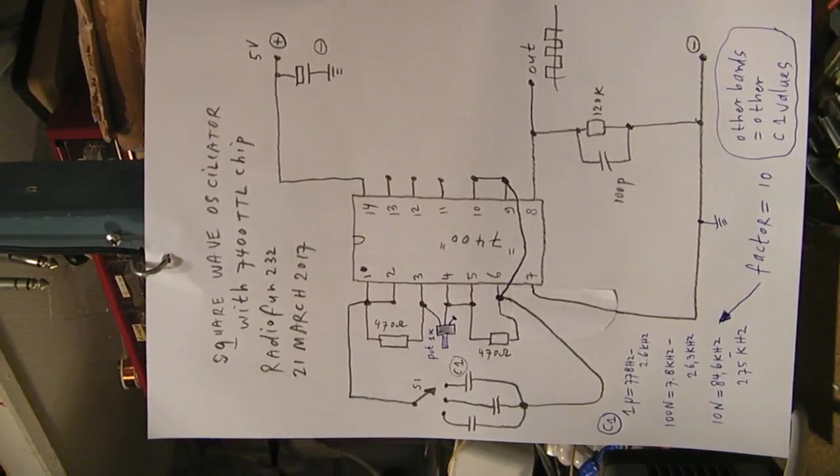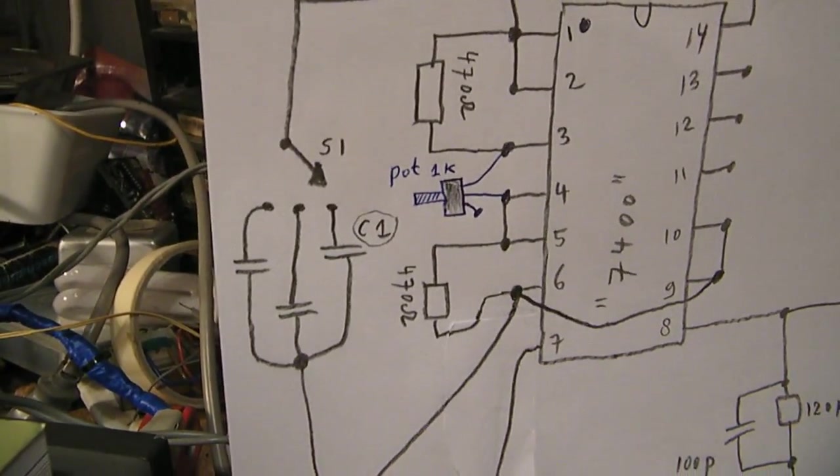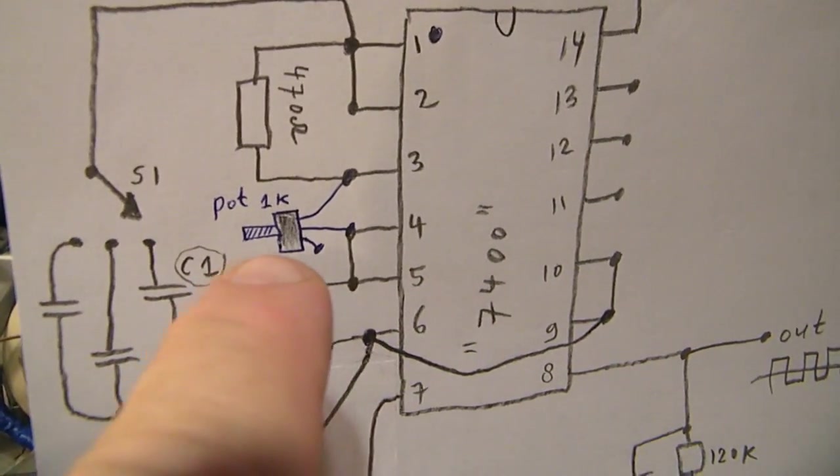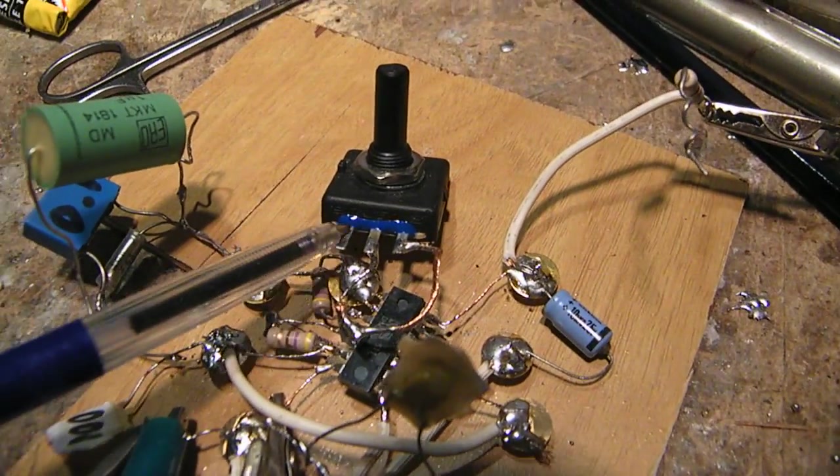You see the C1 cap here, and the potentiometer is here, 1k. I've used a good quality Bourns potentiometer here, very good quality.